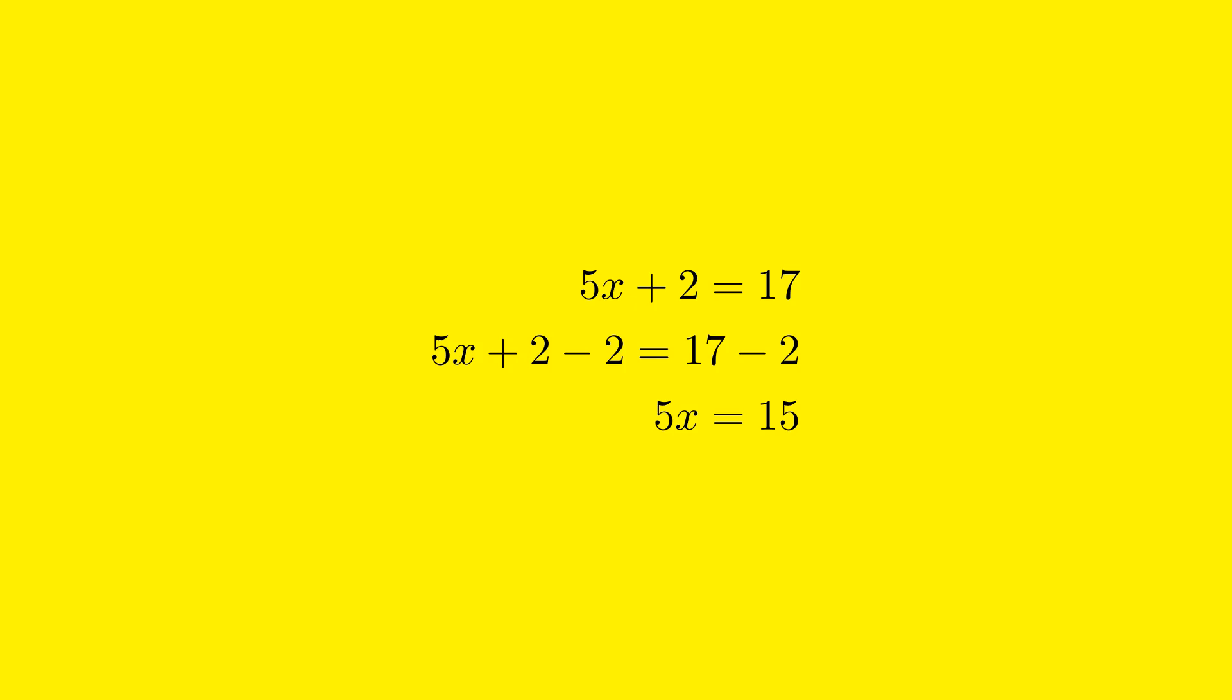After performing the subtraction, our equation now reads 5x equals 15. By subtracting 2 from both sides, we have simplified the equation and taken an important step towards isolating the variable x.